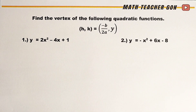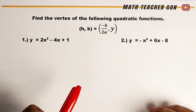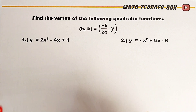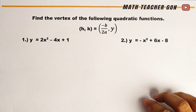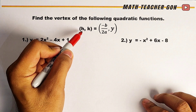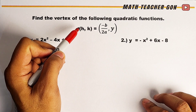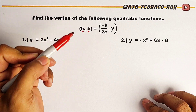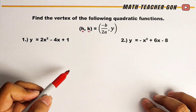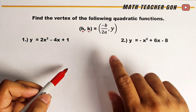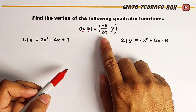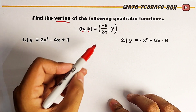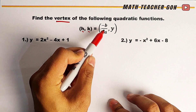So without further ado, let's do this topic. What we have here are two quadratic functions wherein we are asked to find the vertex. By the way, when you say vertex of a quadratic function, these are the coordinates called vertex — we have h for the x-coordinate and k for the y-coordinate. We will use the easiest method, and the formula is negative b over 2a. Let's get started.